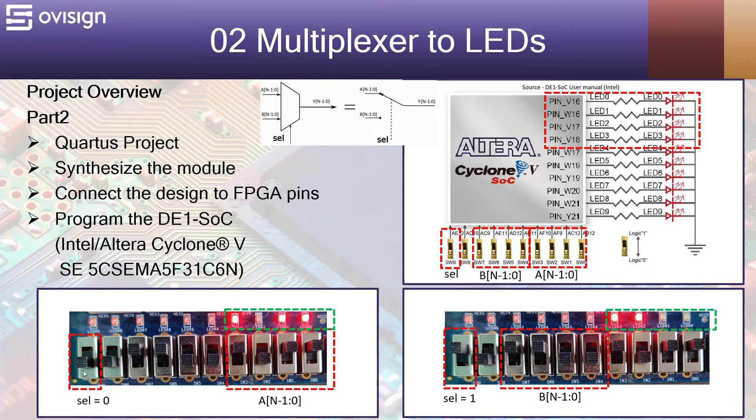When sel equals 0 then you will see on the LEDs the value driven from the switches from bus A. Otherwise if sel equals 1 you will see on the LEDs the value on switch bus B. Pretty simple right?